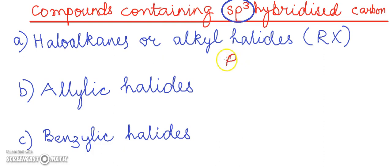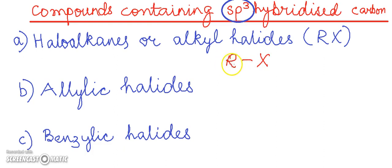The alkyl group is represented as R, and here we have the halogen atom attached to it. So the halogen atom is attached to the alkyl group, and the alkyl group has a carbon with sp3 hybridization.